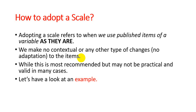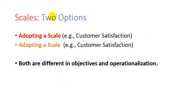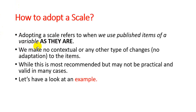So then we go ahead and adapt the scale — we make small changes. Let's take a look at an example of how to adopt a scale. I want to be very specific here so there is no confusion between adopting and adapting. Adopting means we use the scale as it is, while adapting means we make minimum changes according to our context and the objective of our research.